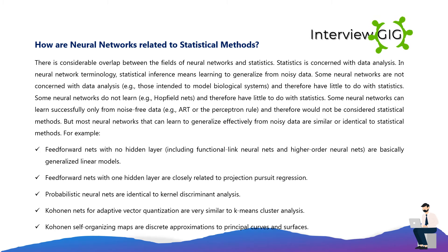For example, feed-forward nets with no hidden layer — including functional link neural nets and higher-order neural nets — are basically generalized linear models. Feed-forward nets with one hidden layer are closely related to projection-pursuit regression. Probabilistic neural nets are identical to kernel discriminant analysis. CSOM nets for adaptive vector quantization are very similar to k-means cluster analysis, and CSOM self-organizing maps are discrete approximations to principal curves and surfaces.